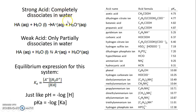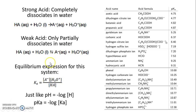With a strong acid, there's no equilibrium — it all reacts to form the hydronium ion. However, when you have a weak acid, it's not going to be completely dissociated, only partially. So you have this equilibrium system between your acid and its conjugate base.